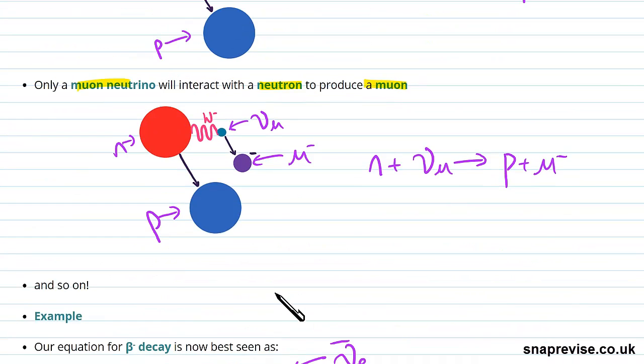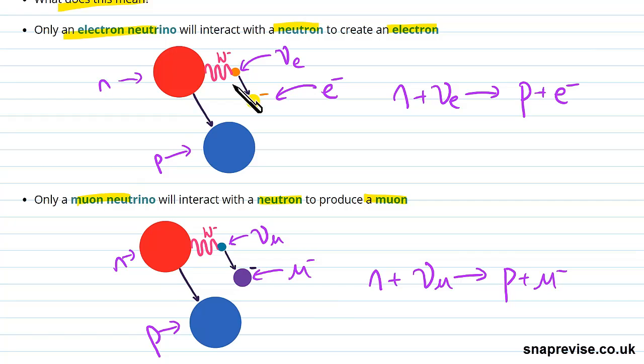We only have electron neutrinos interacting with neutrons to create electrons. It's not possible to have a muon neutrino interacting and creating an electron. You can either see it as this only happens because of this conservation rule, or we have this conservation rule to note that this is the only thing that's allowed to happen.